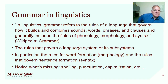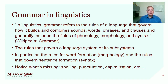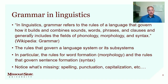Constance Weaver set us up really nicely to talk about what linguists mean when they talk about grammar. In linguistics, grammar refers to the rules of a language that govern how it builds and combines sounds, words, phrases, and clauses. Grammar generally includes the fields of phonology, morphology, and syntax. For linguists, grammar would be the rules that govern a language system or its subsystems like phonology, morphology, and syntax. Many times when linguists talk about grammar, they're referring to syntax — the rules that govern sentence formation — and maybe morphology, the rules for combining constituent parts of words to form well-formed words in a language.